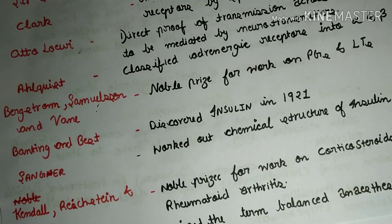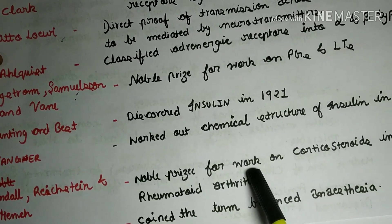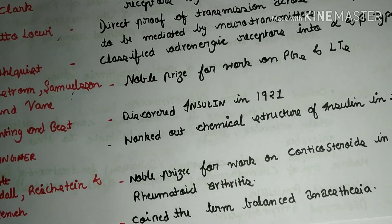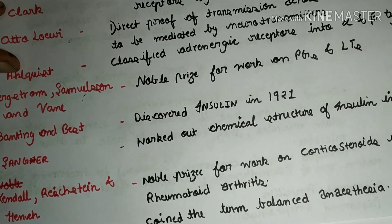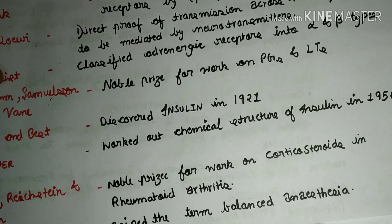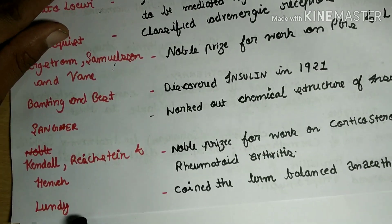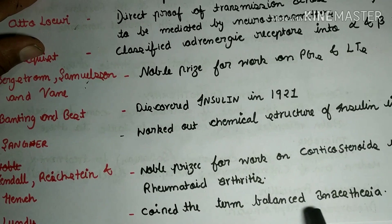Kendall, Reichstein, and Hench won the Nobel Prize for their work on corticosteroids in rheumatoid arthritis. Lundy coined the term balanced anesthesia.